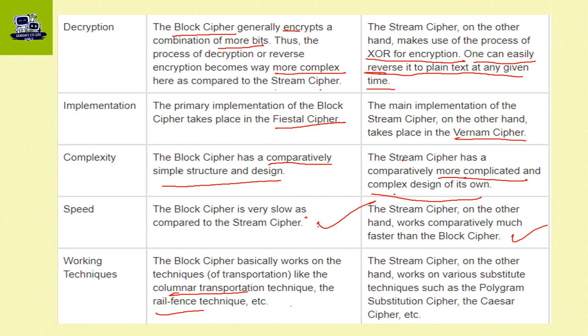These are the differences between block cipher and stream cipher. If you have a 4-mark question, write 4 differences; for 3 marks, write 3 differences. If you found this video helpful, please like, share, and subscribe. Thank you for watching.